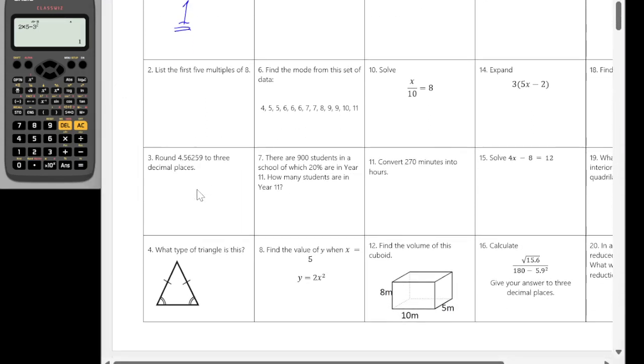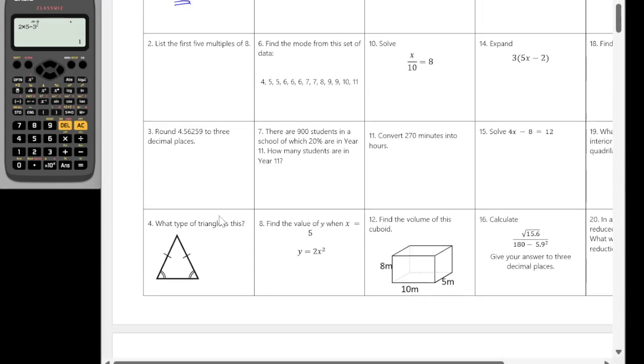Okay, question two. List the first five multiples of 8. So we're doing 8, 16, 24, 32, how many do we want? 5 and 40.